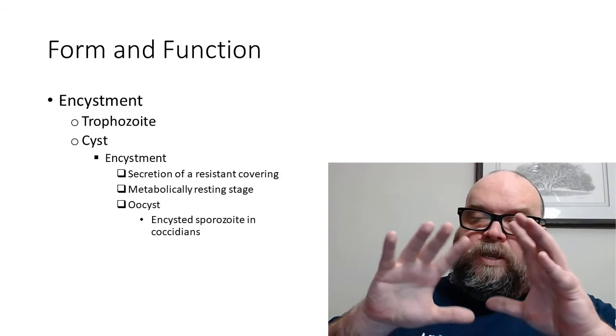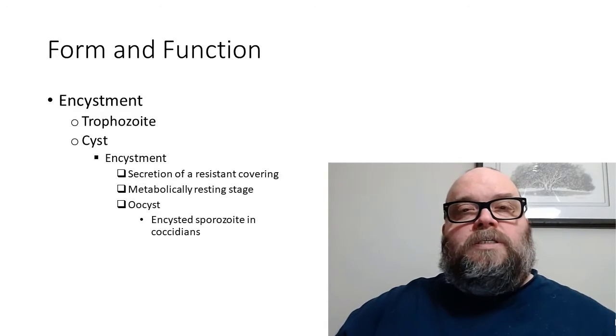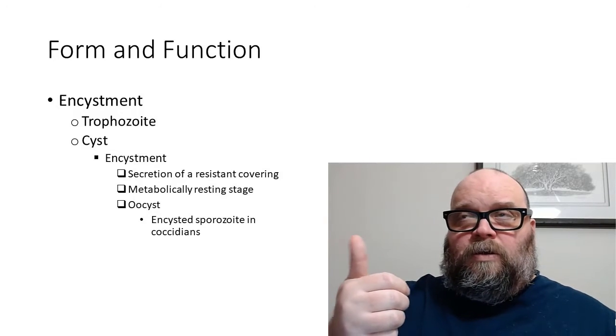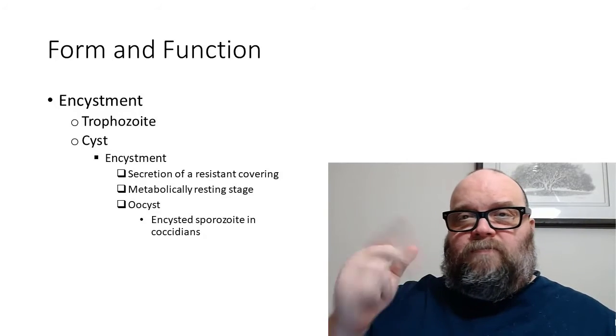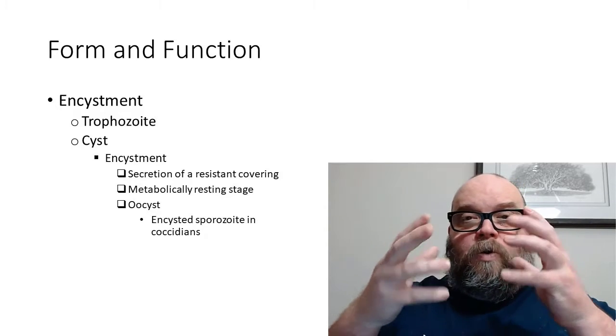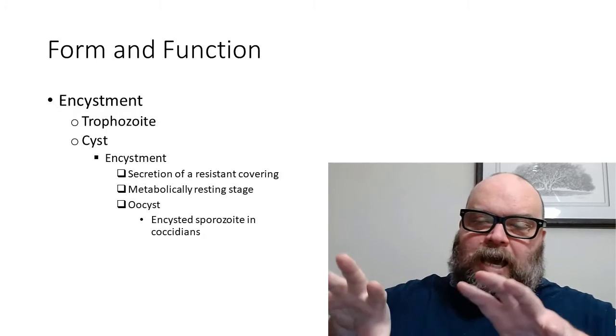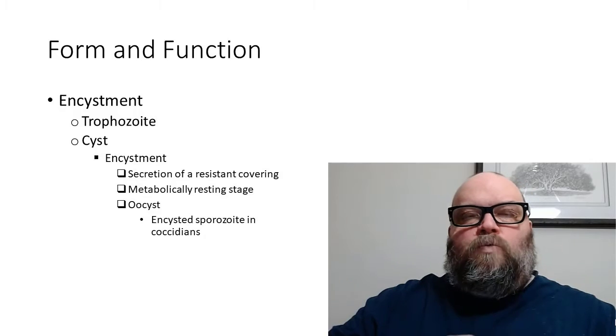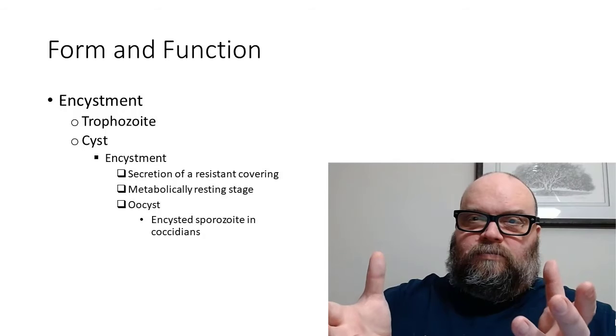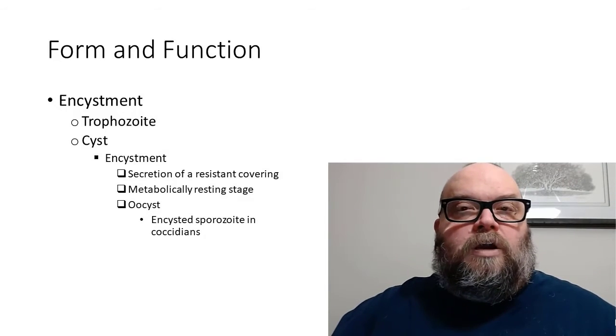During encystment, a coating of proteins and different types of polysaccharides will coat the cell. The cell is already exocytosing different vesicles and vacuoles, starting to break down its internal organelles—the mastigont system and all that—broken them down, gotten them out of the way, stored stuff away. So when this cyst coating covers it, it's now this rounded cell that is just there to wait.